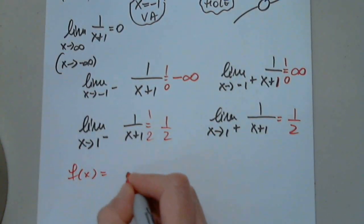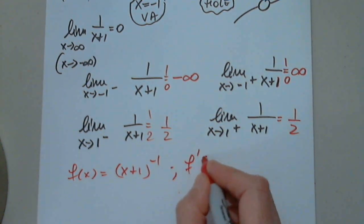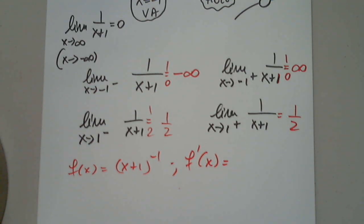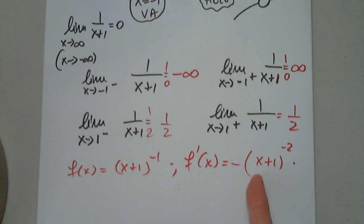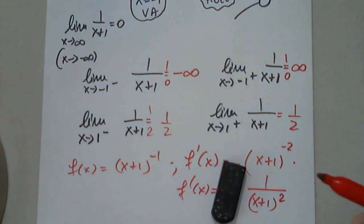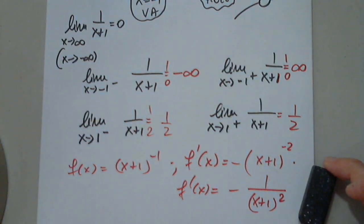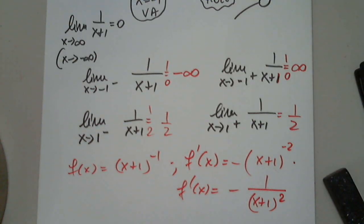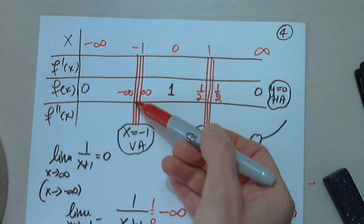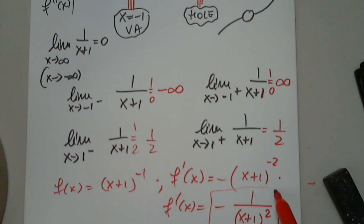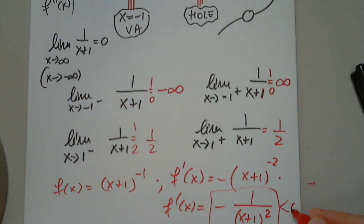So the function is x plus 1 to negative 1. Can anyone give us the first derivative? Negative parentheses x plus 1 to the negative 2, times the inner function prime, which would be 1. Exactly. So f prime of x is negative 1 over x plus 1 squared. What type of number is 1 over x plus 1 squared forever? Positive. Yes. But look at this. So what is the sign? Because there is no critical number, and the function is not defined at negative 1 anyway. But the function is not defined, so it cannot be a critical number. So what will be the sign of the first derivative forever? Negative. Excellent.